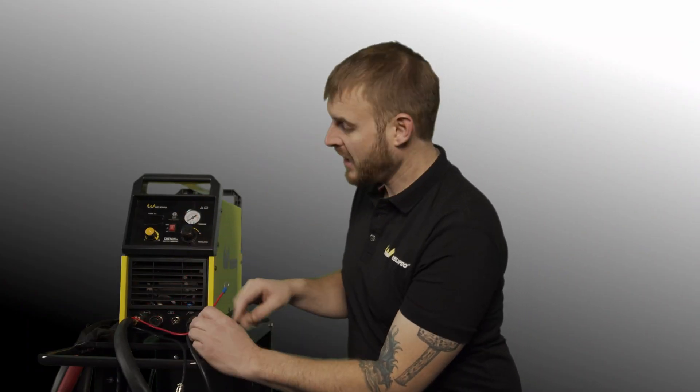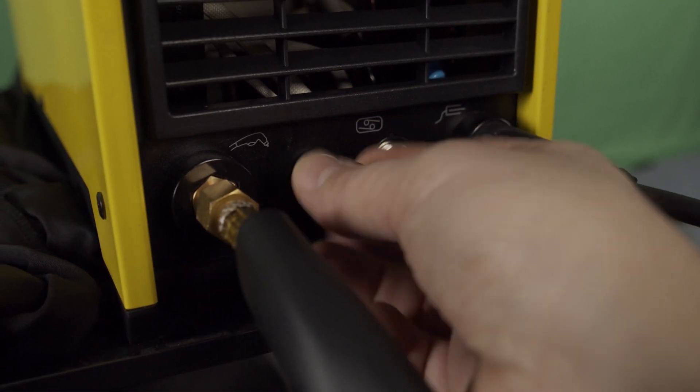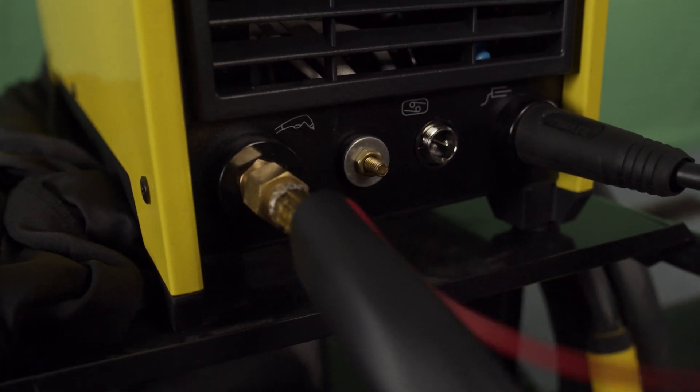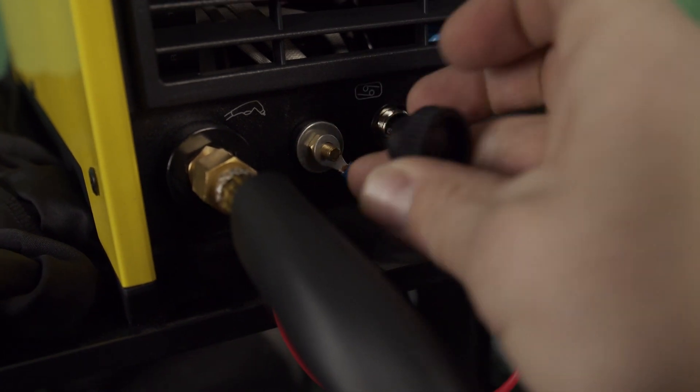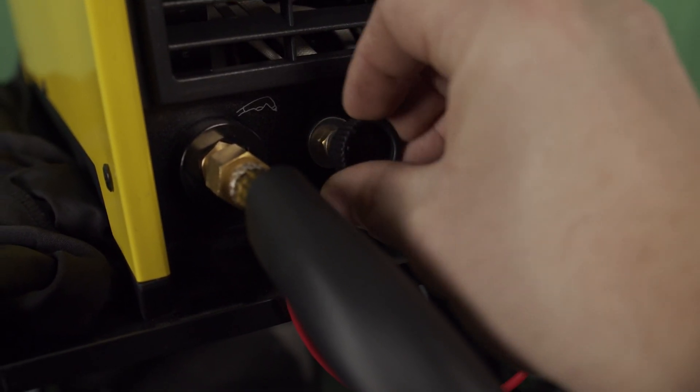Next you'll see a red wire with a little Stacon connector on the end. Also on the front of the machine you're going to see a little black plastic cap. Go ahead and unscrew that and take it off. Under that plastic cap you're going to notice a threaded stud. Go ahead and insert that Stacon connector over the stud and reinstall the black plastic cap.